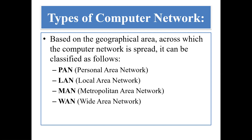The first type is PAN, that means personal area network. Second is LAN, that means local area network. Third is MAN, metropolitan area network. And fourth is WAN, wide area network. Students, this is a very important topic. You have to understand it at the basic level because these topics come in 9th, 10th, 11th, 12th, and so on. So let's understand the types of computer network one by one.